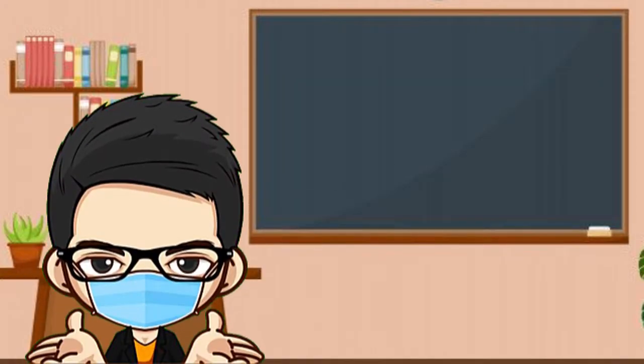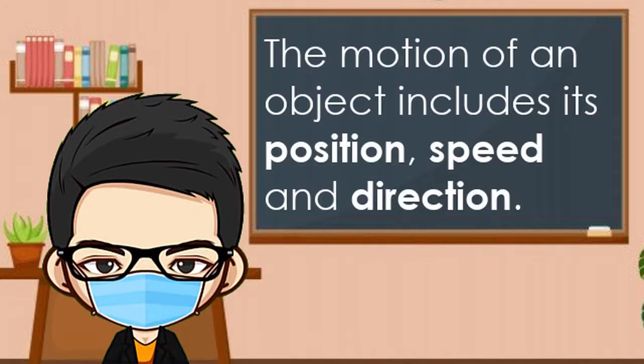So, how do we describe the motion of an object? To describe the motion of an object, we use the position, speed, and the direction of the object.